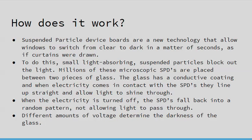Here's how they work. Suspended particle device boards are a new technology that allow windows to switch from clear to dark in a matter of seconds, as if curtains were drawn. Small, light-absorbing suspended particles block out the light. Millions of these microscopic SPDs are placed between two pieces of glass. The glass has a conductive coating, and when electricity comes in contact with the SPDs, they line up straight and allow light to shine through. When the electricity is turned off, the SPDs fall back into a random pattern, not allowing light to pass through. Different amounts of voltage determine the darkness of the glass.